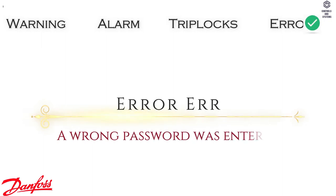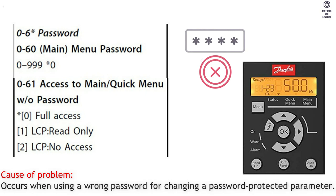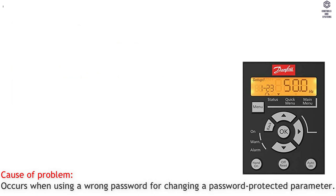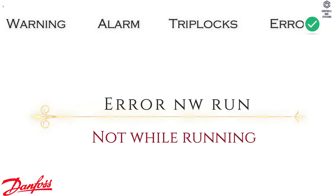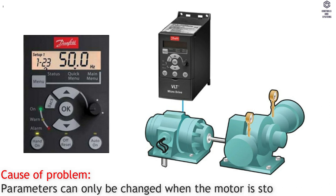Error ERR: A wrong password was entered. Cause of Problem — occurs when using a wrong password for changing a password-protected parameter. Error NW Run: Not While Running. Cause of Problem — parameters can only be changed when the motor is stopped.